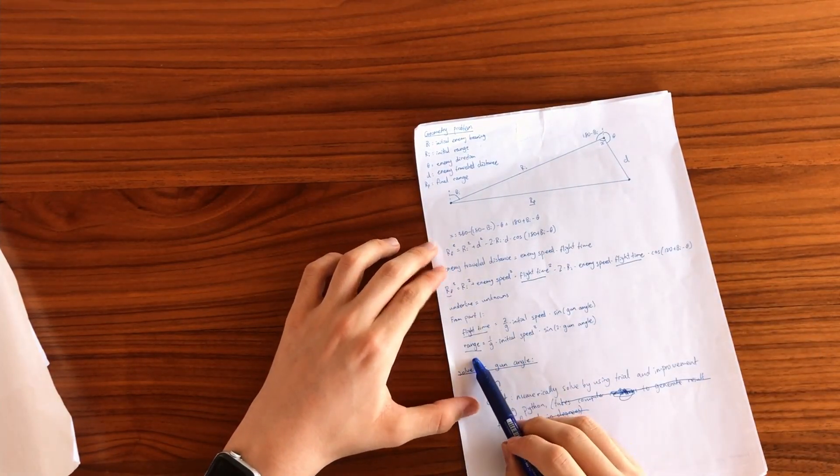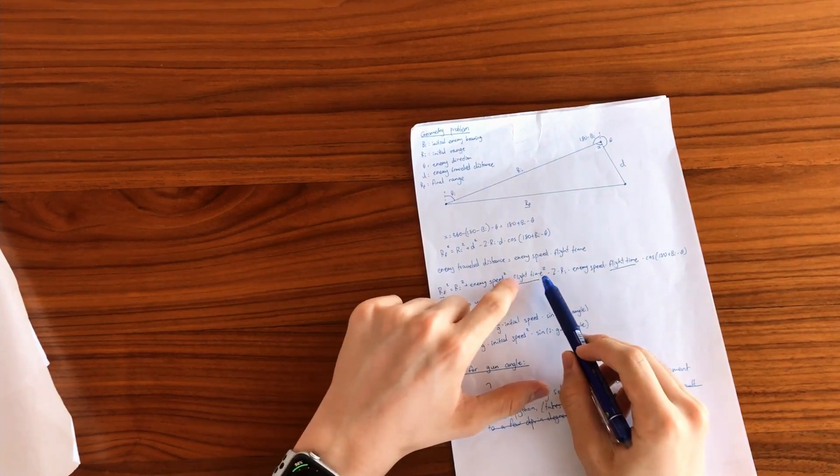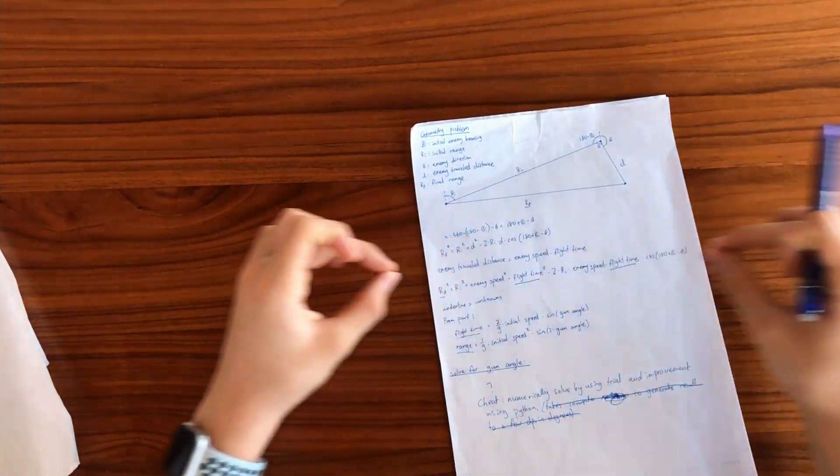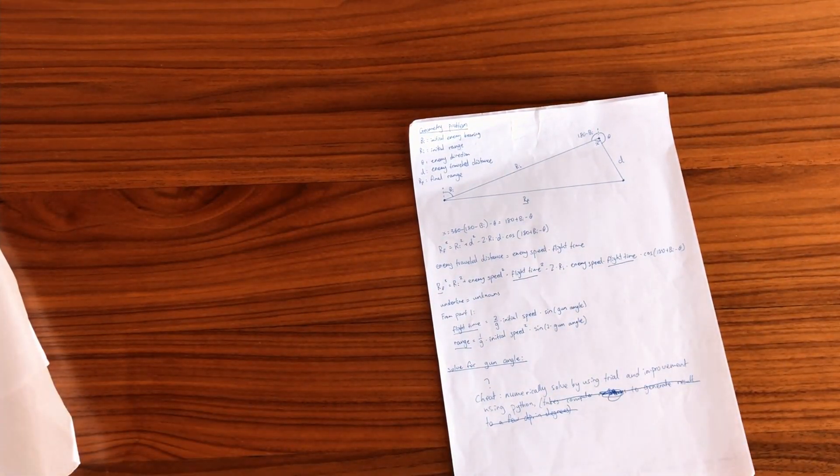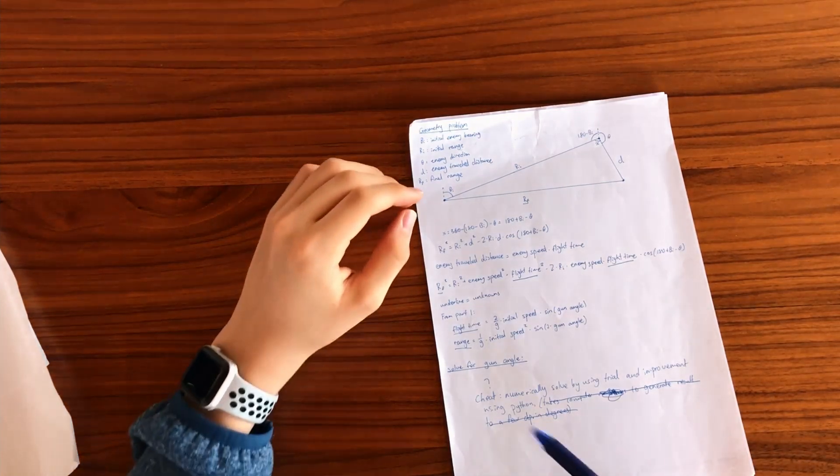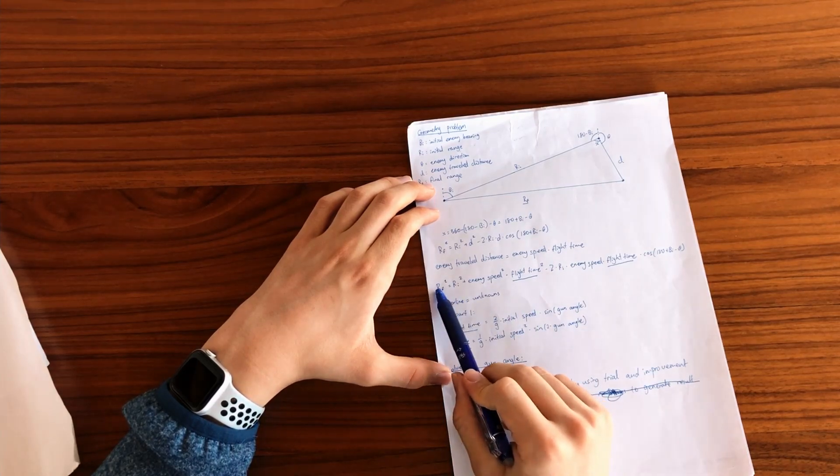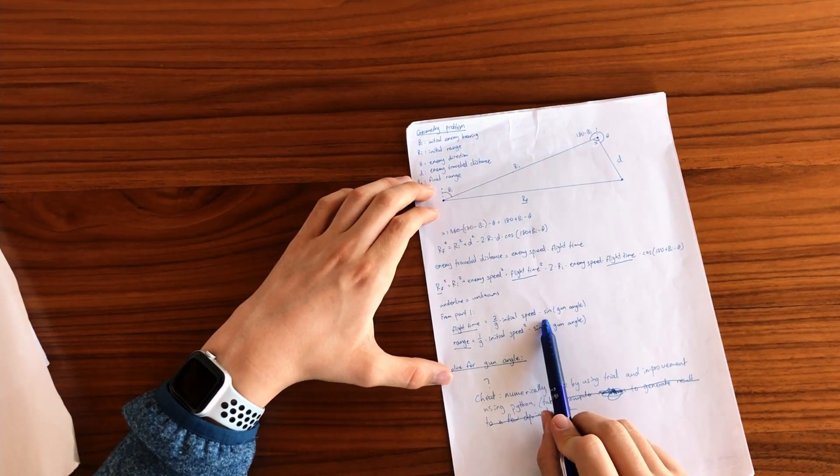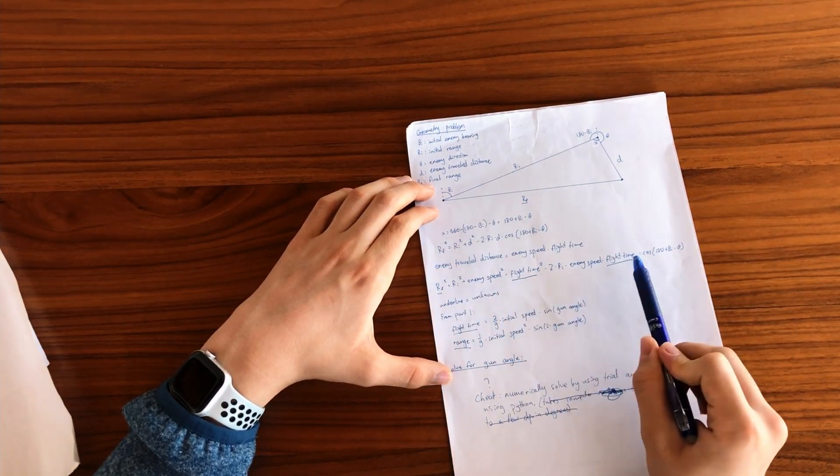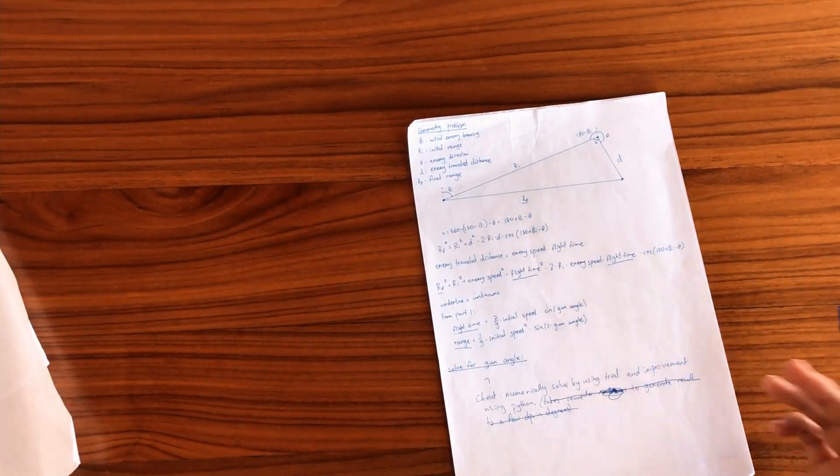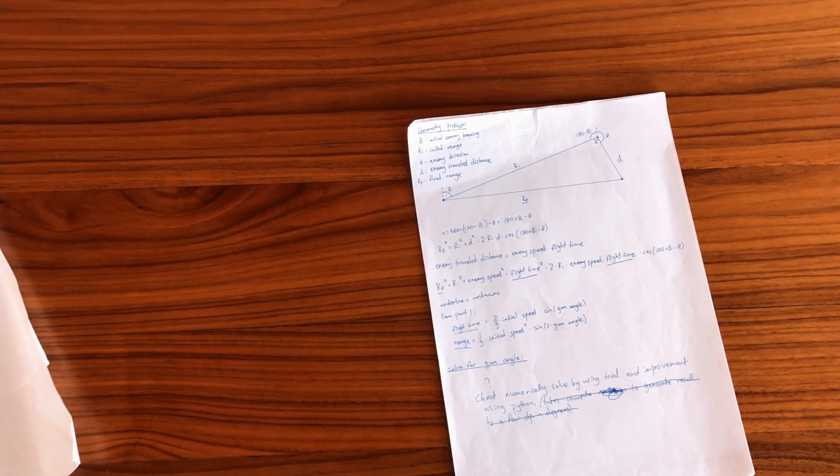However, that's where I got stuck, because what you end up with is final range is in proportion to sine of two times the gun angle. And since it's squared, it will be sine squared two gun angle. Flight time squared as well, in relation to sine gun angle. So you have sine squared two gun angle, sine squared gun angle, and sine gun angle, all in one expression. And I have no idea how you're supposed to solve that, because it's just a mix of different trigonometric things. So after trying for a long time, I gave up the idea of analytically solving it and rearranging it into a single expression for the gun angle itself.